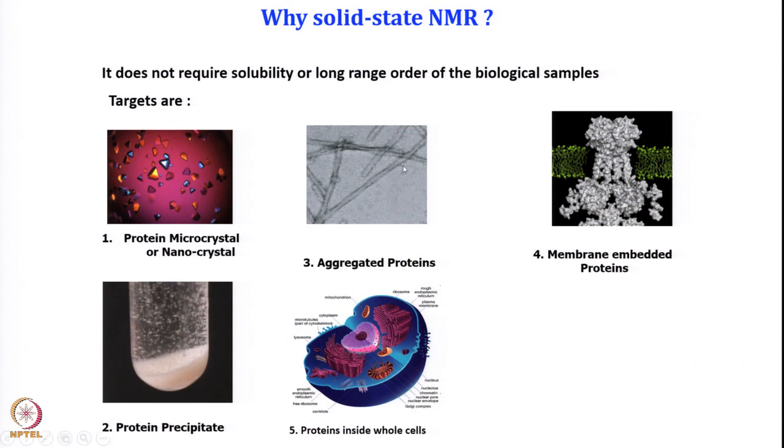Membrane proteins and fibrils are biological materials, and in this section we will focus on how we can deduce their structural and dynamic information using solid-state NMR. So why solid-state NMR? If we could do everything by liquid-state NMR there would be no need, but many biological materials are not amenable for liquid-state NMR. In solid-state NMR, you do not need solubility of these materials, nor the long-range order required for X-ray crystallography.